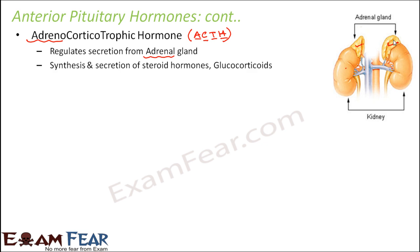ACTH controls the synthesis and secretion of steroid hormones called glucocorticoids from the adrenal gland. We will talk about the adrenal gland in detail later and see what hormones are secreted from it. This hormone also regulates the changes in the body in response to any kind of stress.